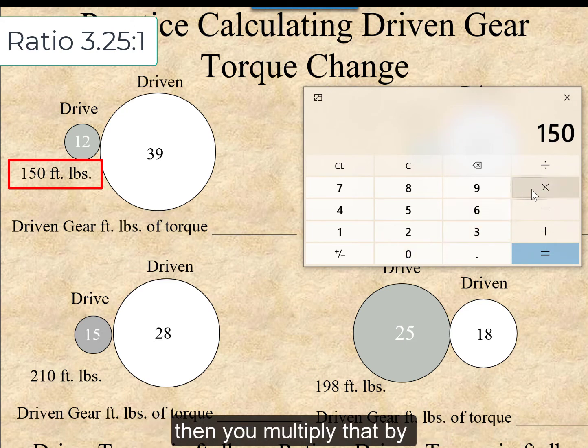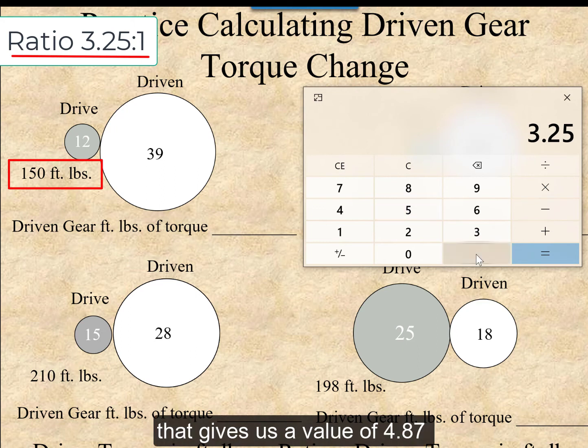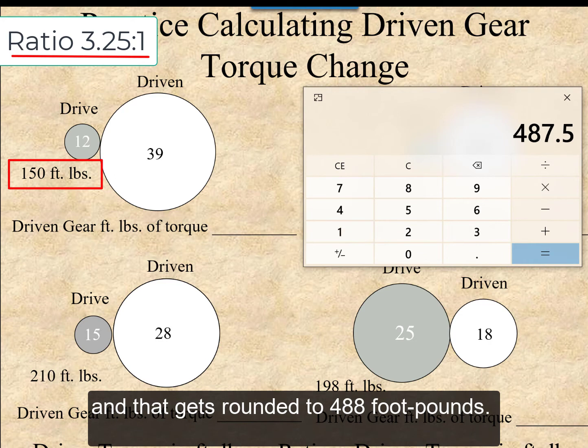Then you multiply that by the gear ratio of 3.25. That gives us a value of 487.5, and that gets rounded to 488 foot-pounds.